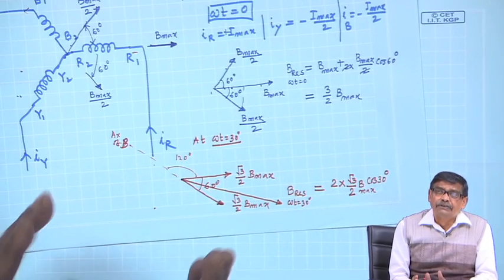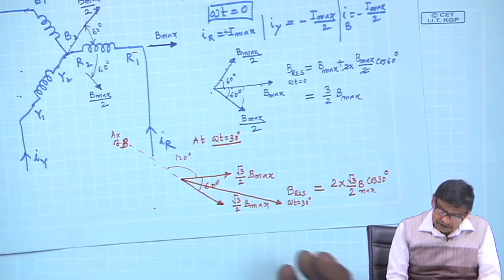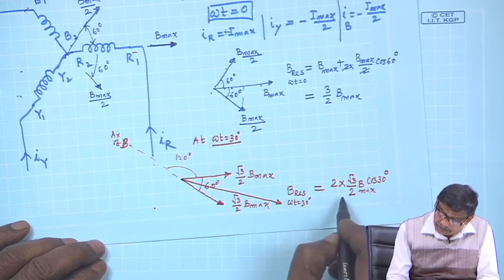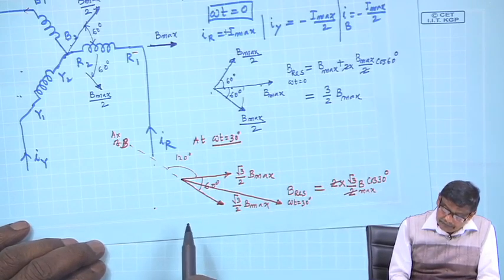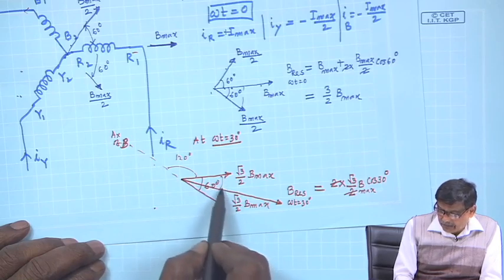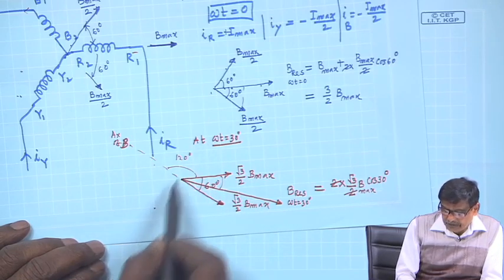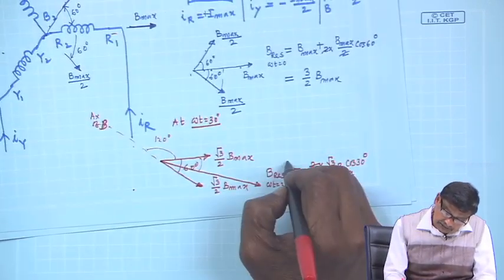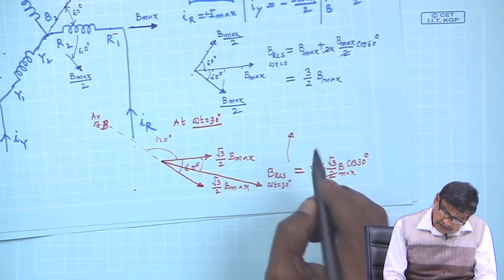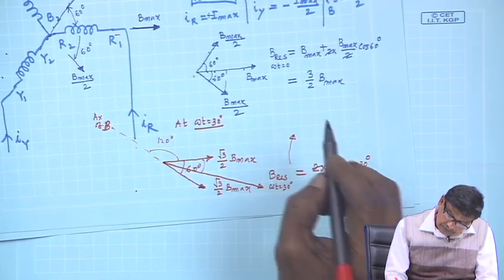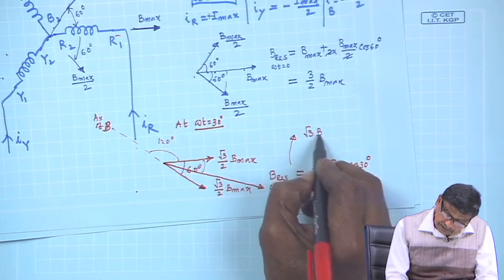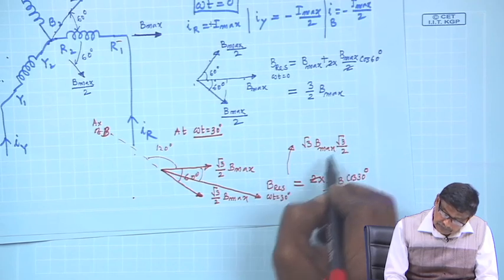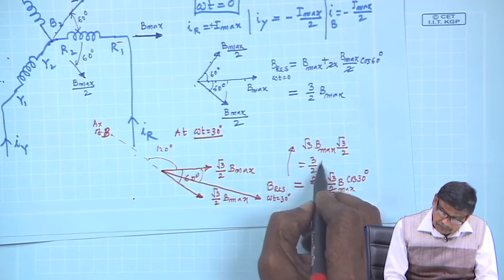We know two equal forces P with angle alpha between them — resultant is 2P cosine alpha by 2. Or you can resolve at 30 degrees: vertical components cancel. So it becomes 2P times cosine 30 degrees. The 2 and 2 cancel, giving root 3 B max times cosine 30 degrees, which is root 3 by 2, equal to 3 by 2 B max.